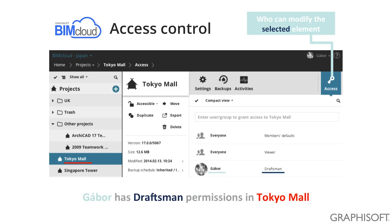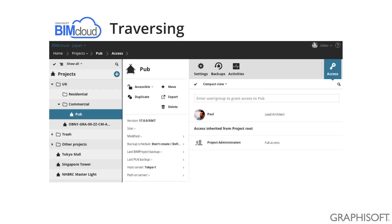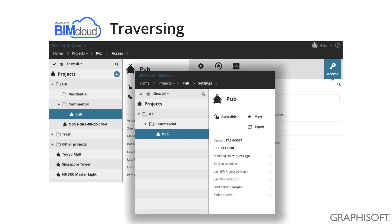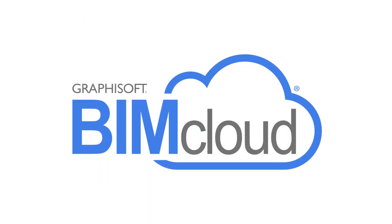All these detailed permissions would require a lot of attention to ensure that users are always able to find their projects. For example, Paul is working on the BIMcloud but he only has access to the Pub project. For a CAD manager, it would mean giving Paul access to the commercial folder and the UK folder as well, so Paul will be able to browse these folders and navigate to the Pub. It would be a very difficult and error-prone process to always make sure that access is given not only to a project, but to the project path as well. That's where traversing comes into play in the BIMcloud — traversing ensures that if a user has access to any item in the project tree, the shortest path leading to that project will automatically be visible to the user. As a result, the CAD manager doesn't have to worry about Paul finding the Pub, because BIMcloud will help him find it.